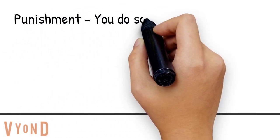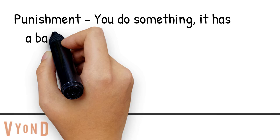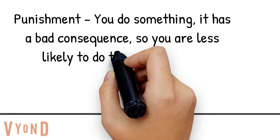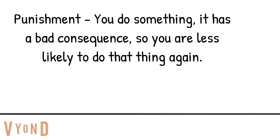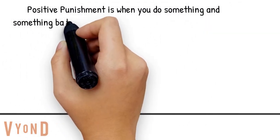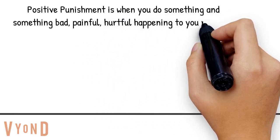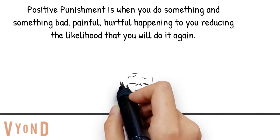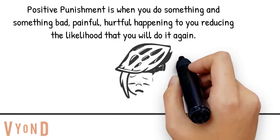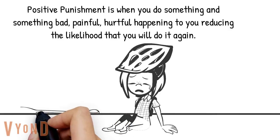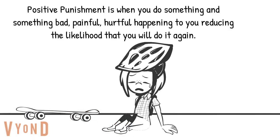Punishment, in contrast to reinforcement, is when you do something and it has a bad consequence, and as a result you're less likely to do that thing again. Positive punishment is when you do something and something bad, painful, or hurtful happens to you, reducing the likelihood that you'll do that thing again. For example, if Sally rides her skateboard down a really big hill and gets hurt, she's less likely to ride down that big hill again.